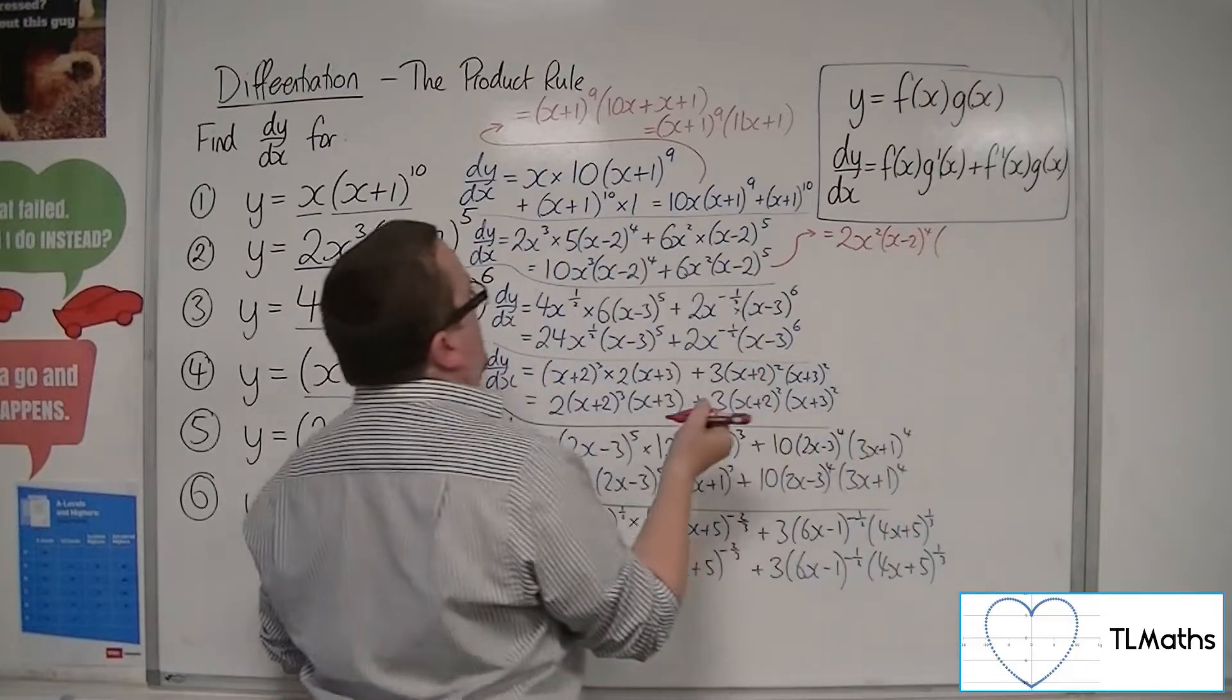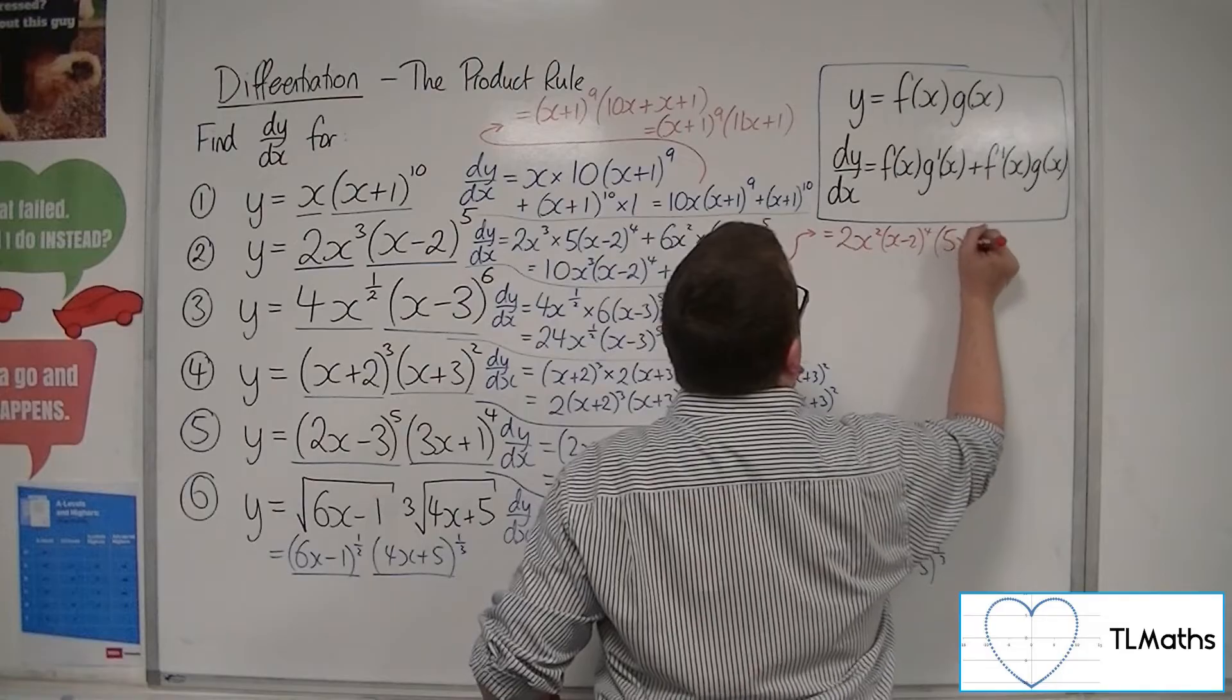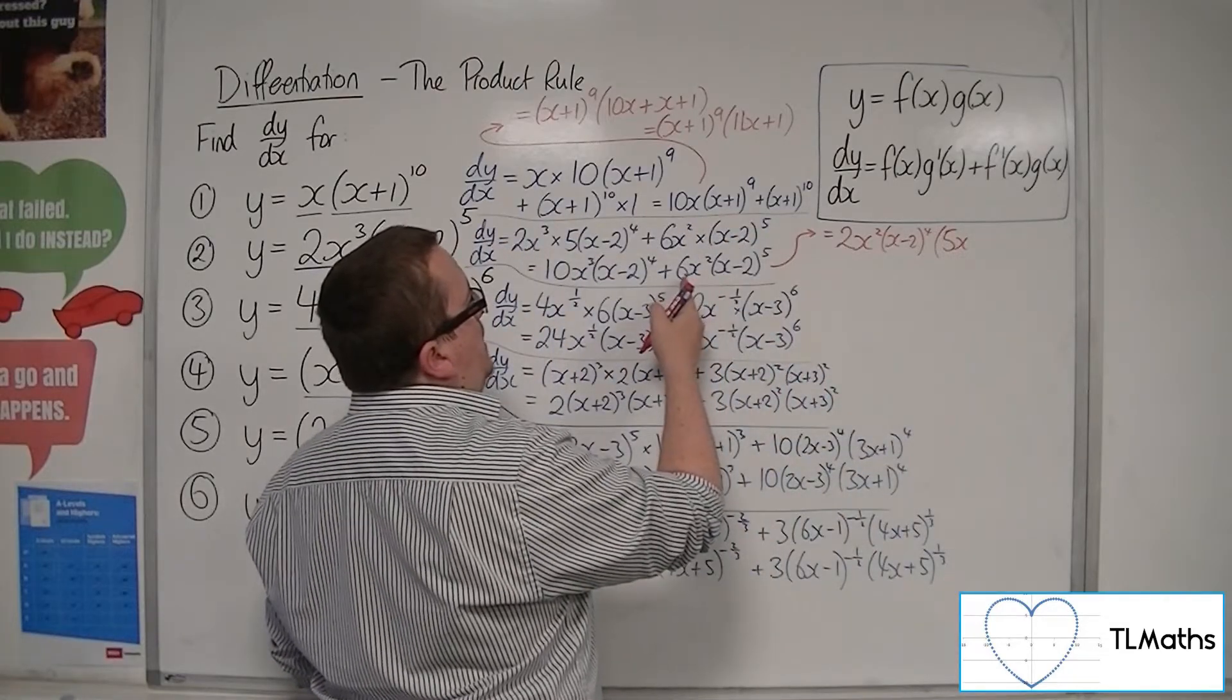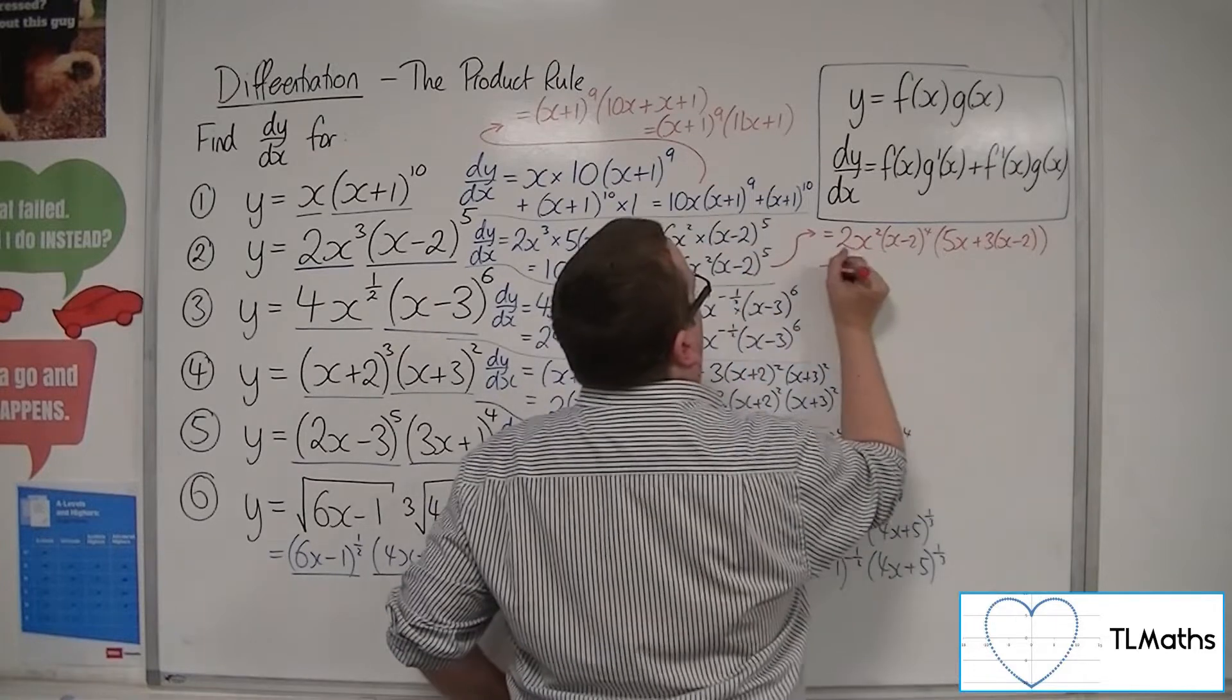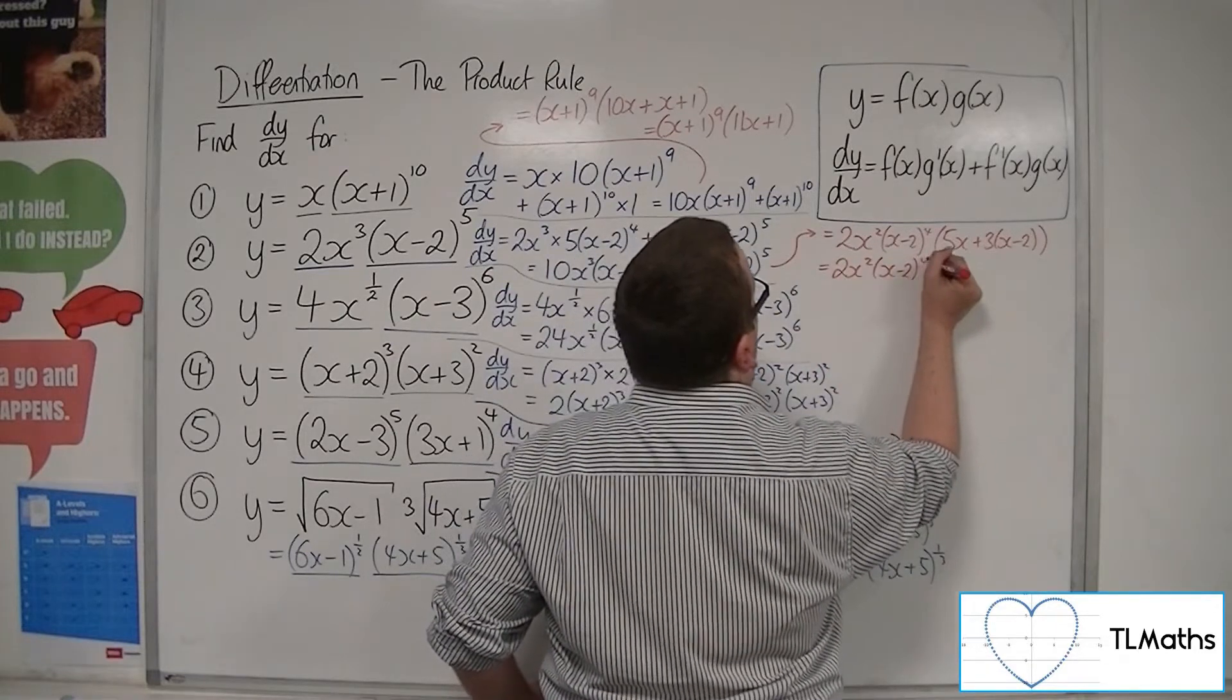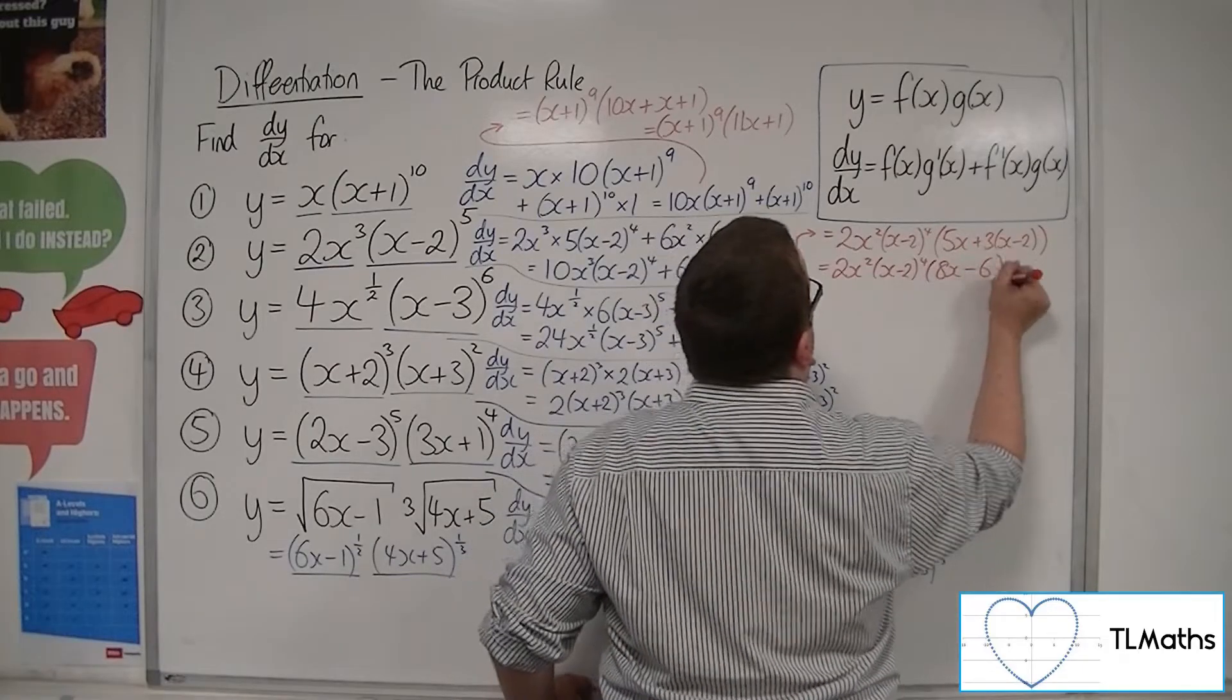Leaving me with 5x from this first term, and here I would have 3 times (x-2). So that's 2x²(x-2)^4, and then I've got 8x-6.